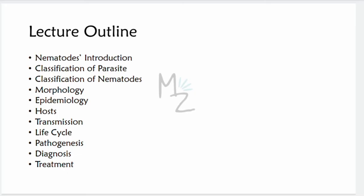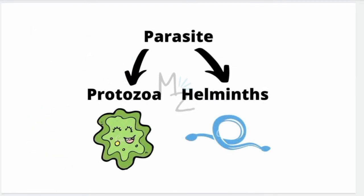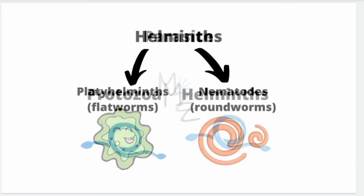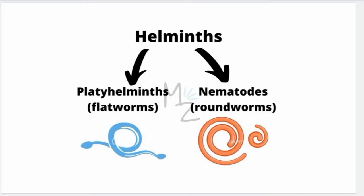A parasite is an organism that needs other organisms for its survival. Parasites are classified as protozoa — for example, Entamoeba histolytica — and helminths — for example, Diphyllobothrium latum. Helminths are further classified as platyhelminthes (flatworms), for example Taenia saginata, and nemathelminths (roundworms), for example Wuchereria bancrofti, which we are going to discuss today.